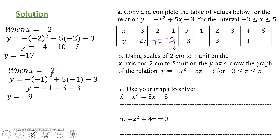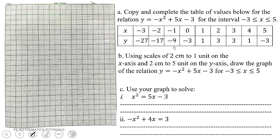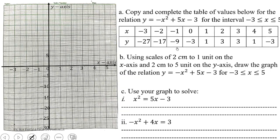We continue the same process until we get a complete table. For the purpose of your examination, at least these two are enough — use your calculator to fill in the remaining missing values. Now that we have the complete table, we can plot the points on the x-y Cartesian plane. We draw our x and y axes, label them, and apply the scales given to us.